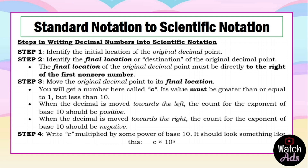For Step 4, write c multiplied by some power of base 10. It should look like this: c multiplied by 10 to the nth exponent.